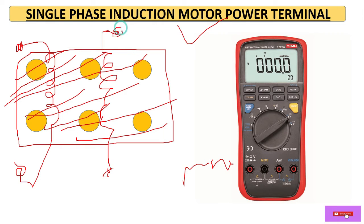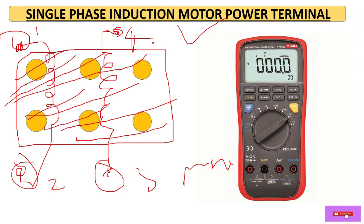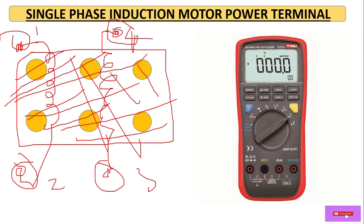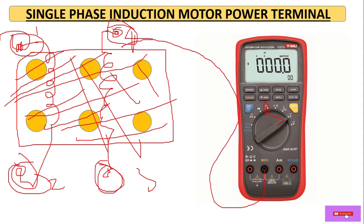If we have four terminals taken out — suppose terminal one, two, three, and four — first we have to check the continuity of the windings. At this moment we don't know which winding corresponds to which terminal because it is hidden. So we set the multimeter knob to continuity mode, place the common probe on one terminal and touch the others one by one.